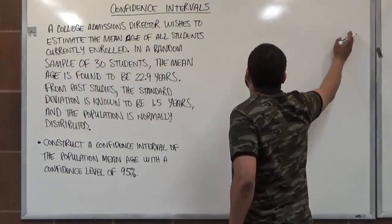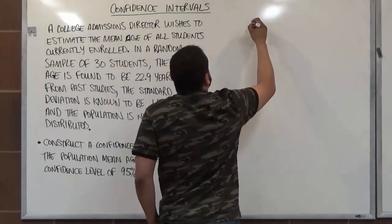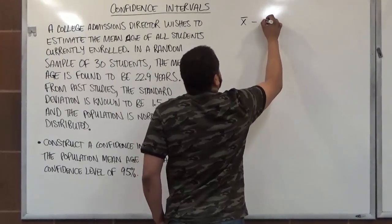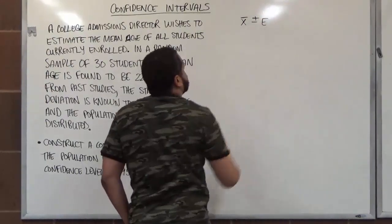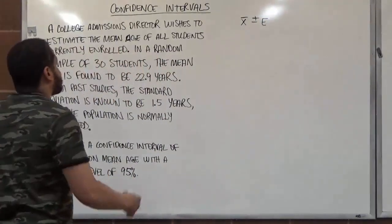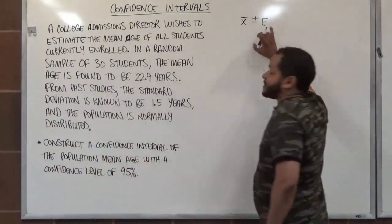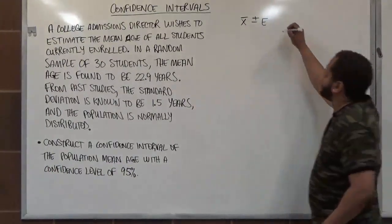There's two ways we can solve this. One is, the confidence interval is x̄ plus or minus the error. This is a shortcut formula where the x̄ represents the best point estimate and the e represents the margin of error.